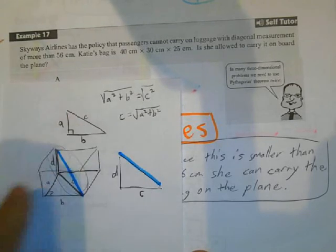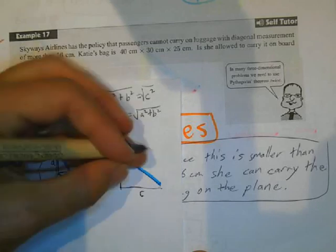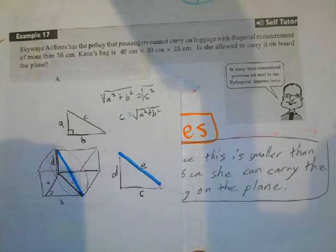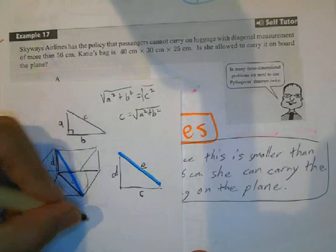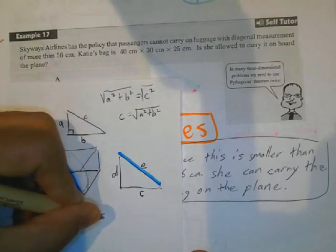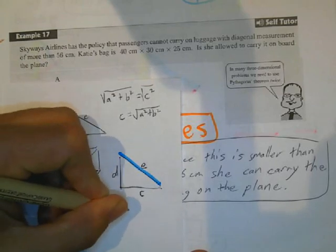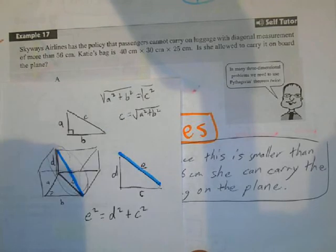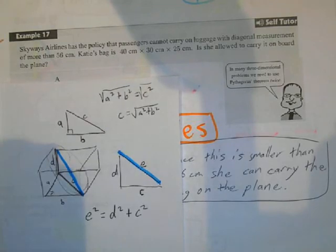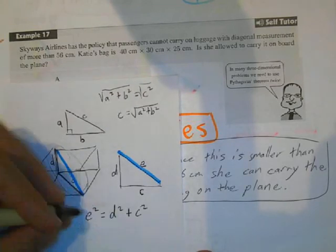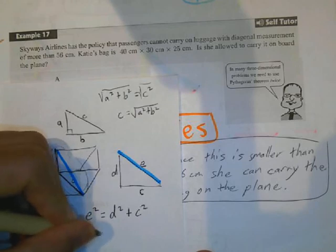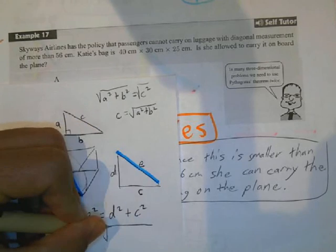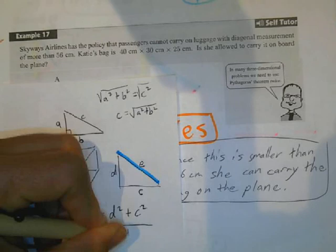And the length of the blue line, let's just call it E. So if I'm trying to find the length of the blue line, I can say E squared is equal to D squared plus C squared, using Pythagorean theorem again. So if I'm solving for E, I can say E is equal to the square root of D squared plus C squared.